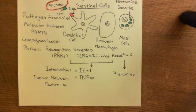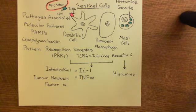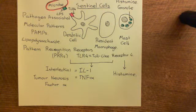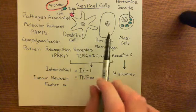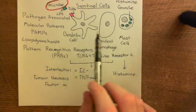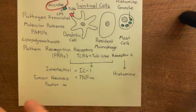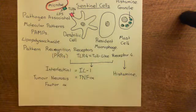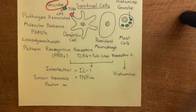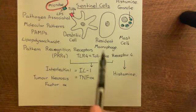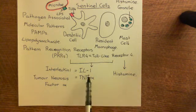Welcome back to this next video in which we are discussing the acute inflammatory response and anti-inflammatory drugs. We're currently looking at the acute inflammatory response. We've discussed that when these three types of sentinel cells — dendritic cells, resident macrophages, and mast cells, which are scattered all over the place in your tissues — when they detect the presence of a foul or pathogen in our tissue, then they are going to send out panic signals, these pro-inflammatory mediators.